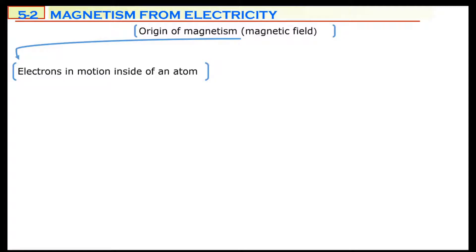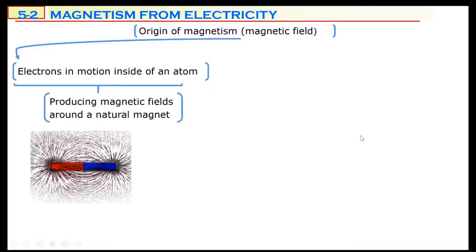We started this in section one. The charges which are in motion produce the magnetic field. The charge inside the atoms, if they move, they produce a magnetic field for the atom. These magnetic fields cause atoms to form domains. If domains are in the same direction, they form a magnet, just like the one in the picture — this is a natural magnet. But we can set the charged particles into motion externally.